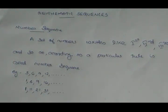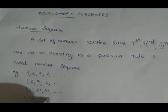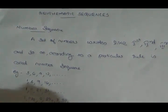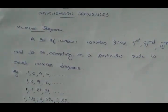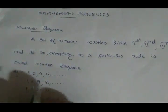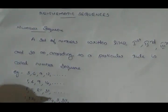This is another example: 1, 1 and a half, 2, 2 and a half, 3, 3 and a half. This is a number sequence — a set of natural numbers starting with 1 and adding half again and again.